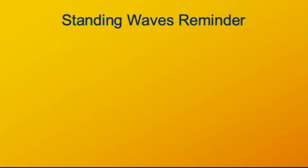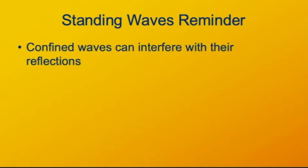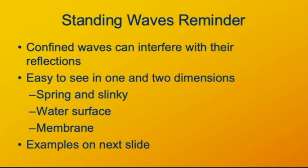Let's review a little bit about what we've seen about standing waves. When a wave is confined to some space between clamps in a tub of water, then the waves interfere. They combine with their reflections. In one and two dimensions, it's easy to see how this happens when you have waves in a spring, or in a slinky, or on the surface of water, or in a membrane.